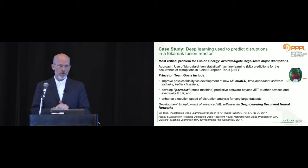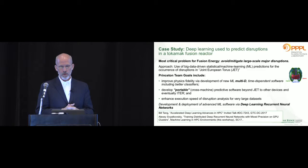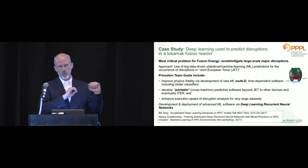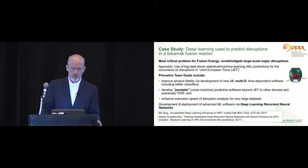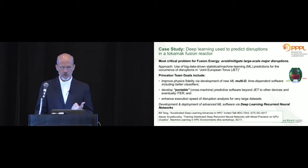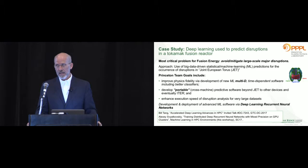Moving on to the fusion application: deep learning can be used to predict plasma disruptions in a tokamak reactor. The most critical problem for fusion energy is how to avoid or mitigate large-scale major disruptions—where the energy of your tokamak could be dissipated in a way that could harm the reactor itself. The approach being tried at Princeton Plasma Physics Laboratory, led by Bill Tang, uses big data-driven statistical machine learning predictions for disruption occurrence in the Joint European Torus (JET).